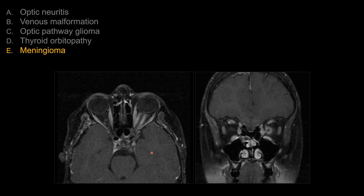For choice D, thyroid orbitopathy or Graves' disease, you should see symmetric or bilateral enlargement of the extraocular muscles. Remember the mnemonic 'I AM SLOW' for the classic pattern of muscle enlargement progression. You also often see expansion of the orbital fat volume causing bilateral proptosis. We don't see that here, so answer E is the best choice.